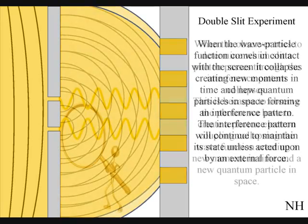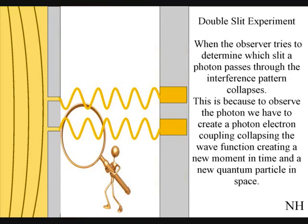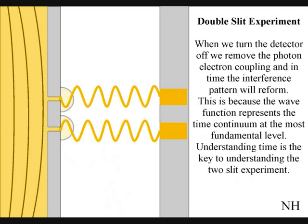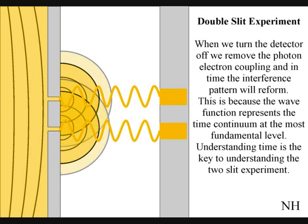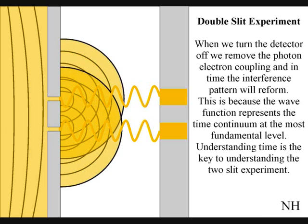When the observer turns on a detector to determine which slit a photon passes through, the interference pattern will collapse. This is because to observe the photon, we have to create a photon-electron coupling, collapsing each wave-front into a new quantum particle that will have its own position in space and time. If we turn the detector off, we remove the photon-electron coupling, and in time, the interference pattern will reform.